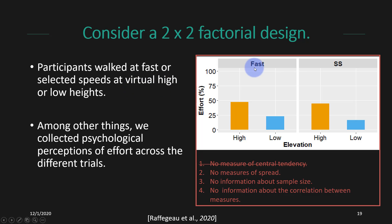That's actually shown over here. This was an experiment where participants walked at fast or self-selected walking speeds at a virtual high or low height. I have their fast speed in one panel, their self-selected speed in another panel, then they're walking at height, or they're walking basically at ground level. Then they're rating their effort in the task. What we can then plot is their mean level of effort across like 20 individuals. We're looking at their self-perceptions of effort in both the low and the high condition, and at both self-selected and fast walking speed. This is pretty good because we have a measure of central tendency. However, there's no measure of spread. It doesn't really tell us anything about the sample size or the number of data points that we had. And it doesn't tell us about the correlation between the measures.